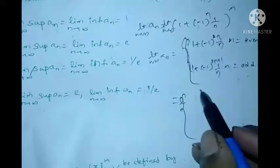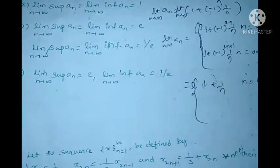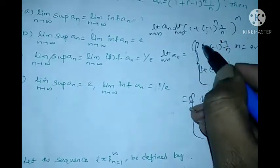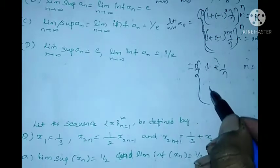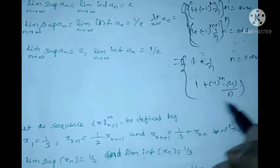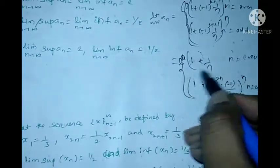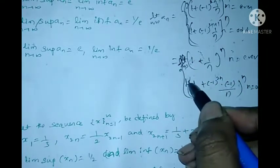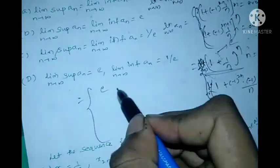We split as follows: when n is even, the expression becomes (1 + 1/n)^n. Applying the limit as n tends to infinity, by the standard result, this value is e. So when n is even and we apply the limit, the result is e.